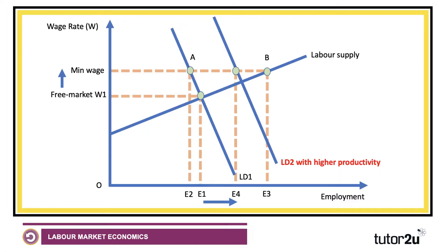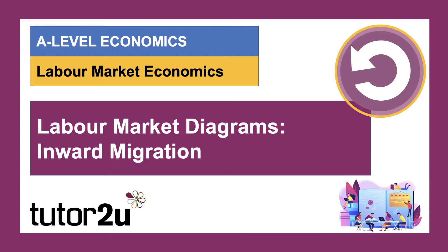The point here, as a revision tip, is that developing the diagram a little bit and taking it one stage further can help the analysis, and then automatically it helps the evaluation. To what extent is productivity linked to the minimum wage? What happens if firms are making less profit — do they have the funds to invest in more efficient technology? Developing these ideas is crucial to getting top marks at A-level and IB. In the third of our short series, I'll look at how you can use labour demand and supply diagrams to show the effects of inward migration.